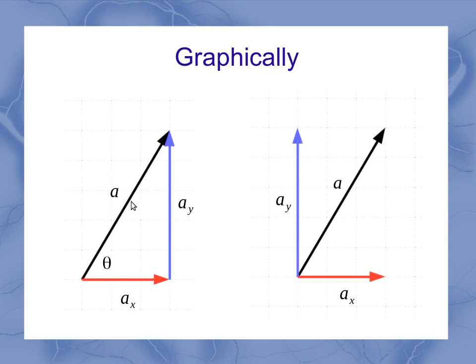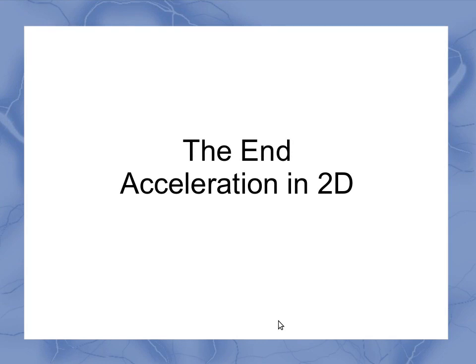Graphically, if our vector a is off in some direction theta here, then I've got my two components, ax and ay. And that shows us a notation we're going to be using for acceleration in two dimensions.